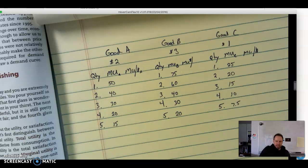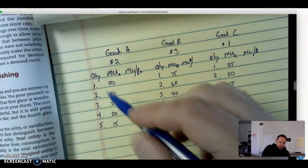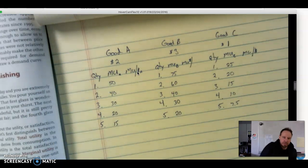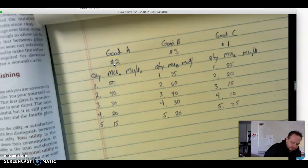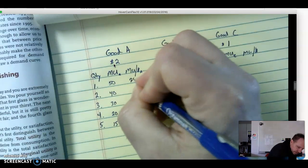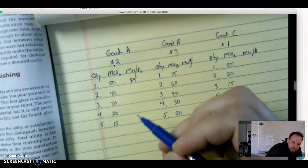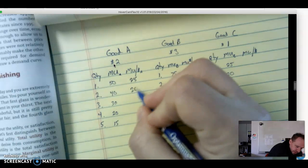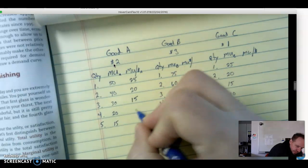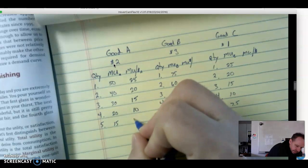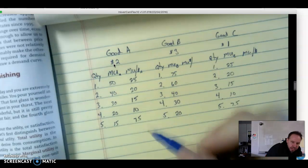I have set up my table with the data from the question. The first thing you need to determine is what is our marginal utility per dollar. We take the marginal utility and divide it by the price of the good. So 50 divided by the price, which is $2, is going to be 25.